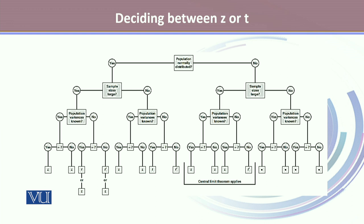Let's first look at the case where populations are normally distributed, sample sizes are large, population variances are known, and they are equal. In that case, we will use Z to calculate the reliability factor.